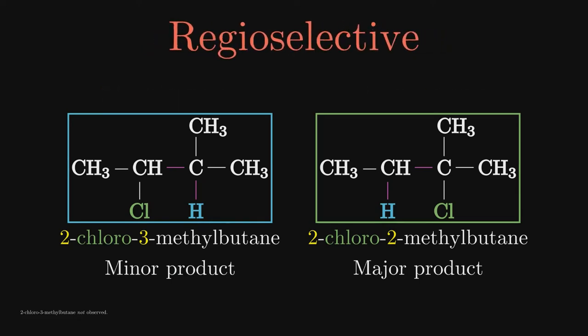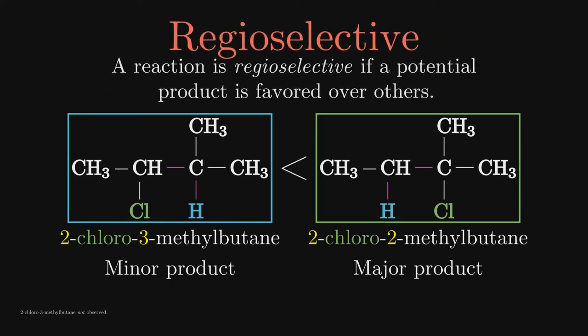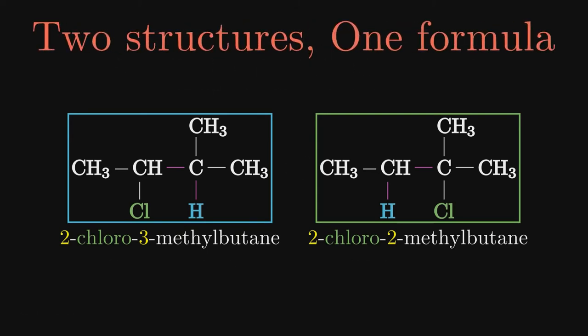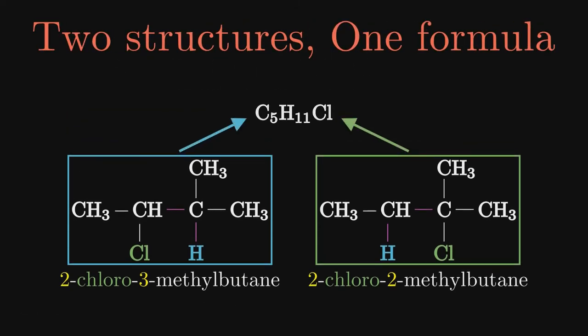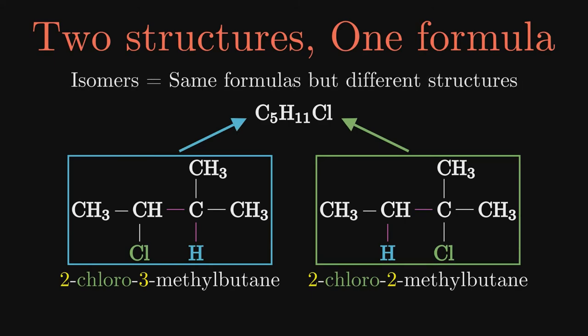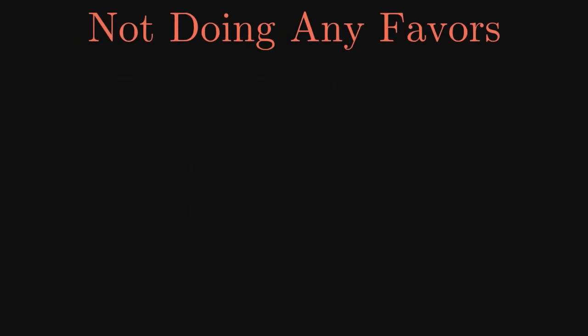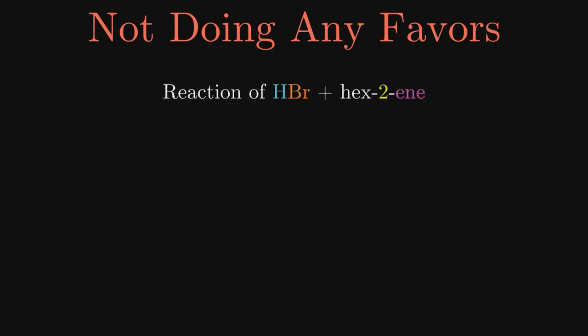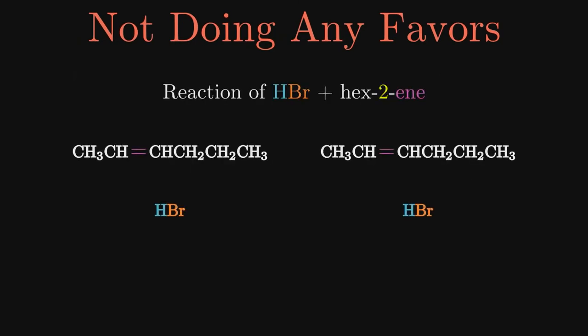Therefore, this reaction is regioselective because the production of one of the potential products is favored. You probably have noticed that these products have different structures but the exact same formula. In general, they were referred to as isomers and this is an example of a structural isomer. But not every reaction is regioselective and produces one isomer more than the other.